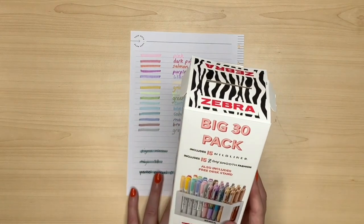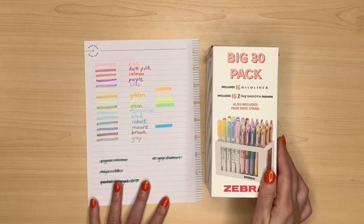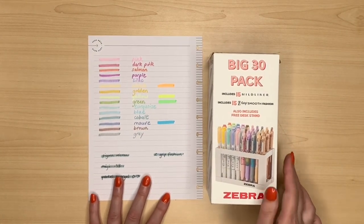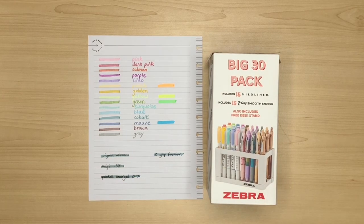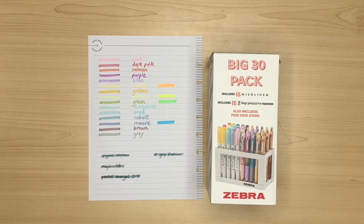So that's my review of the Big 30 Pack Zebra pens, available from Tesco's in the UK. They are meant to be available until the start of September, so you have got a bit of time to try and track them down. Even if you just want the useful desk stand.